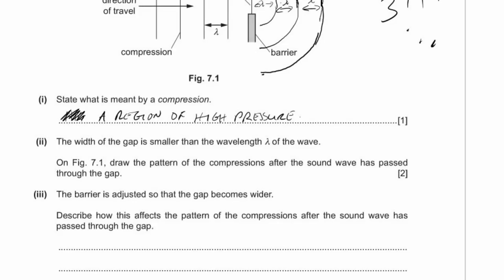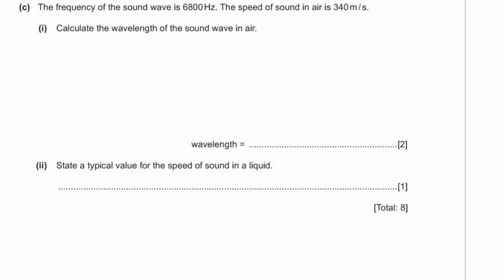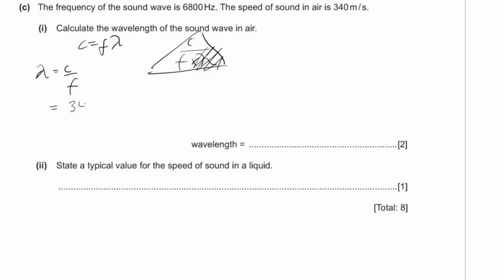When the barrier is adjusted so the gap becomes wider, the wave will spread out less after passing through. For the wavelength: using c = fλ, rearranging gives λ = c/f = 340 m/s ÷ 6800 Hz = 0.05 meters. Make sure the decimal point is visible and include the units.